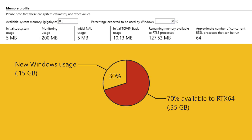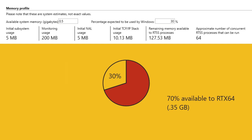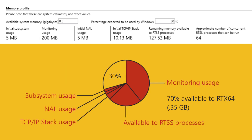The RTX 64 control panel uses this information as part of its calculations to determine the optimal allocation amount for each mspace.